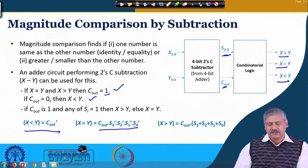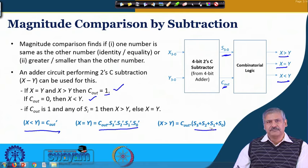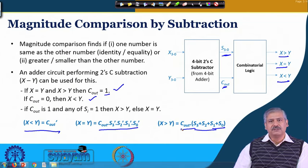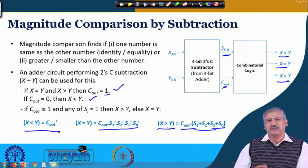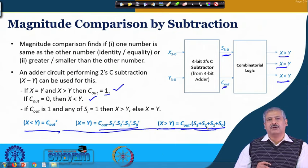X is equal to y will occur when all the sum bits are 0. At that time, each of the sum bits is 0, meaning the result is 0 and carry out generated is 1, following 2's complement subtraction. If any of the sum bits is 1, that gives us x greater than y logic. When generating multiple output functions, we can see whether some intermediate output can be reused, and accordingly some minimization can be achieved.